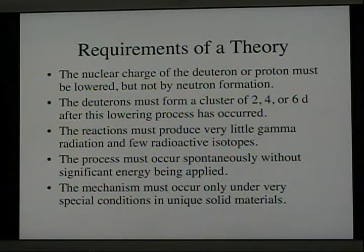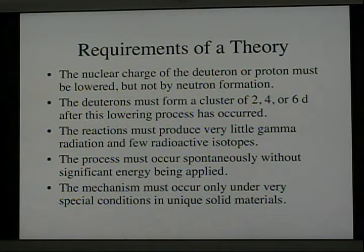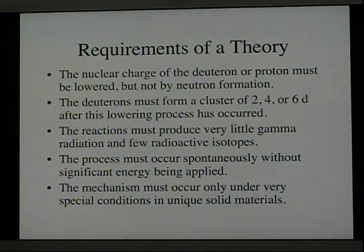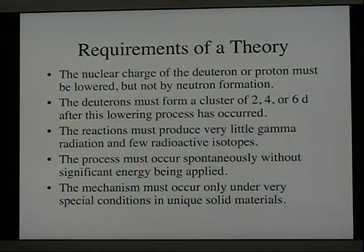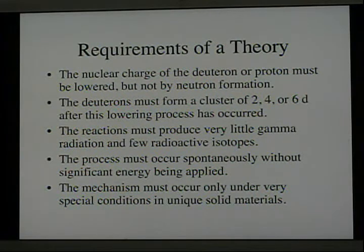Even the fusion reaction making helium is thought to result from four deuterons getting together to make beryllium-8, and then this decomposes into two alpha particles, thus eliminating the need for gamma radiation. The reactions must produce very little gamma radiation and few radioactive products. The process must occur spontaneously without significant energy being applied — it happens at room temperature, without any effort once the nuclear active environment has formed, but it is helped by the addition of more energy, either as greater heat, bombardment, or laser light.